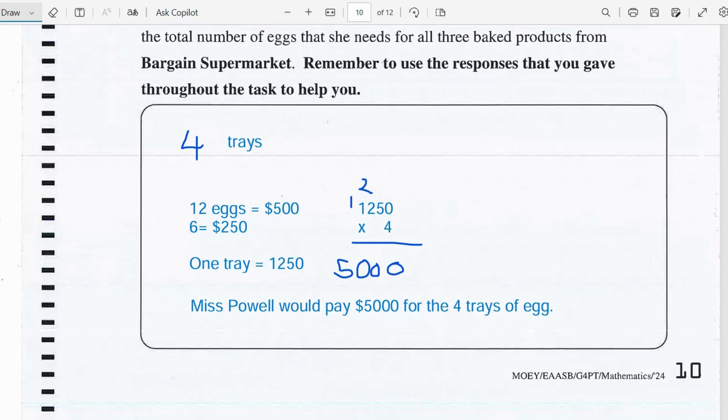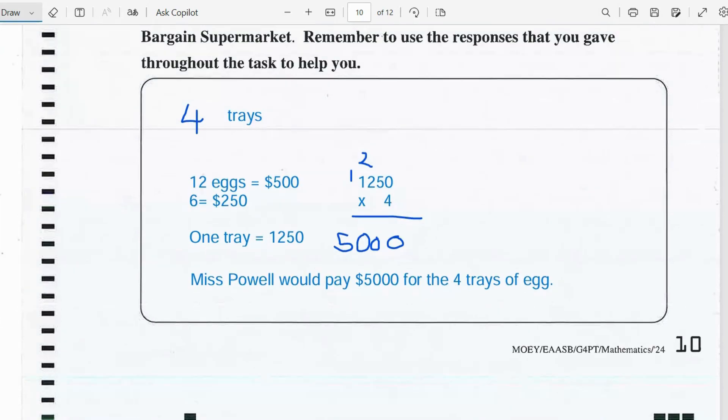So we'll have to add 12 times plus 2, or times 2. 12 plus 12 will give us 500 plus 500, or we can say 500 times 2 which is $1,000. And then we'll add the 6 to make it the 30 for the 1 tray.